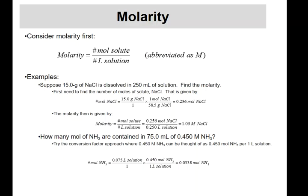How many moles of ammonia are in 75 milliliters of 0.45 M ammonia? Wherever you see a capital M, read it as moles per liter — it's a conversion factor. Start with 0.075 liters of solution, multiply by 0.450 moles per liter, and the liters cancel out. The answer is 0.0338 moles of ammonia. The conversion factor method keeps things straight so you're not guessing.